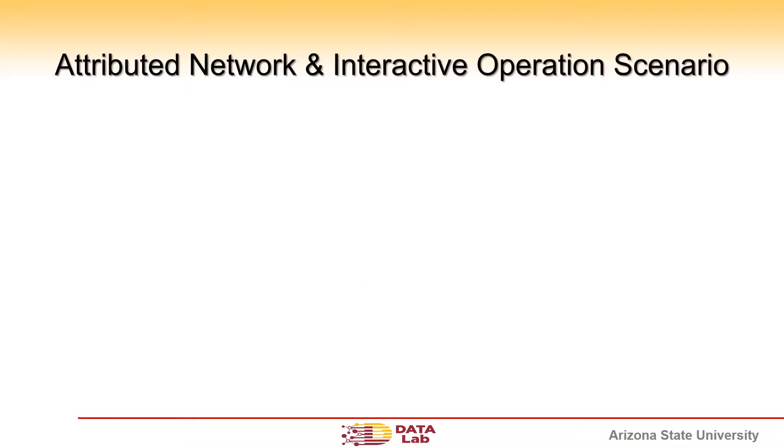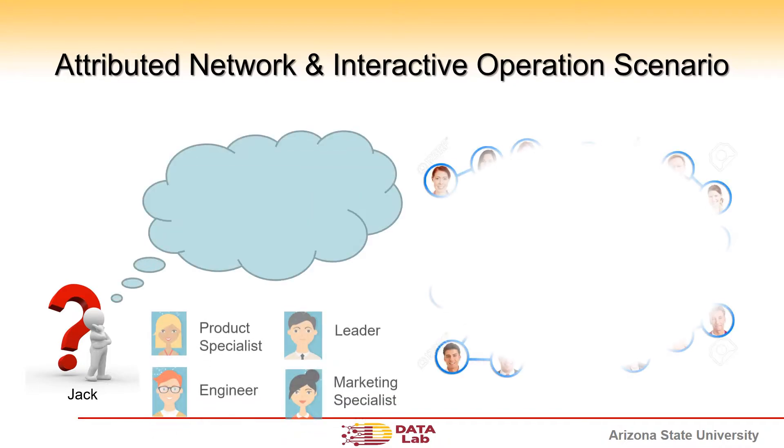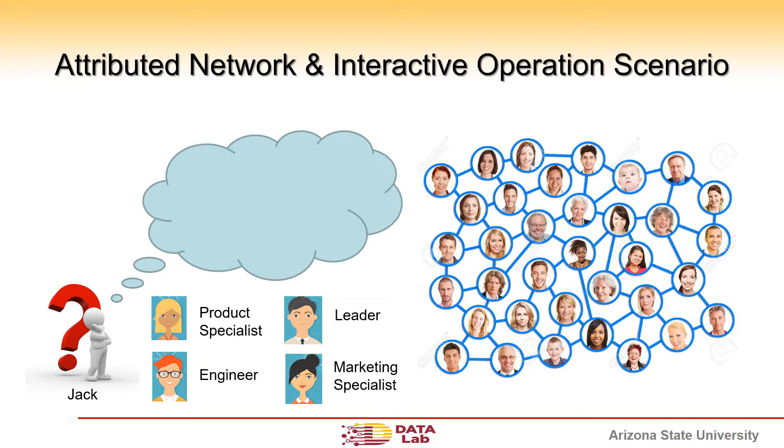However, real-world networks are filled with attributes, and users only have vague patterns that need revising along the way of exploring a dataset. For example, Jack wants to build a startup team from this social network. In the beginning...